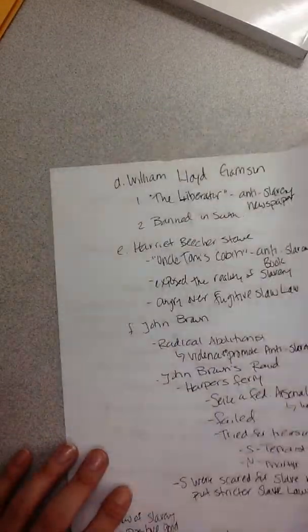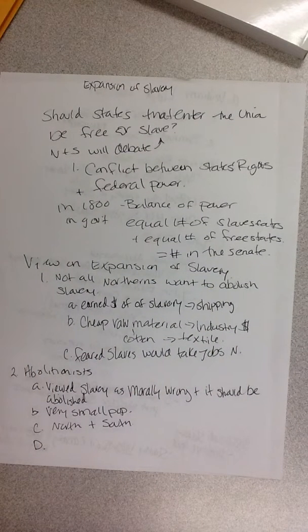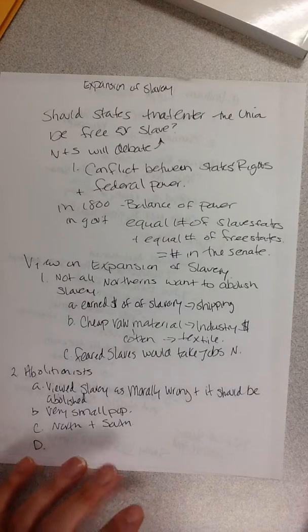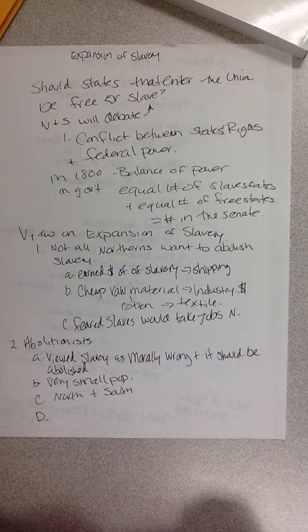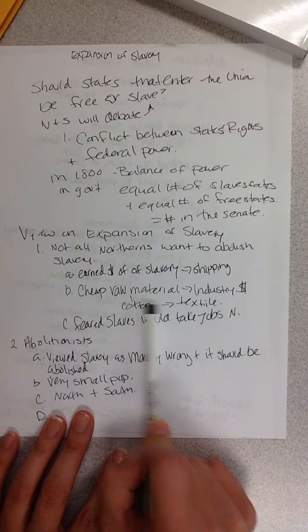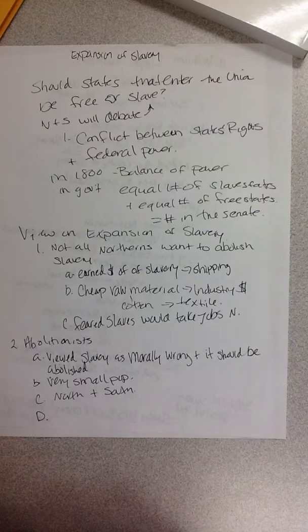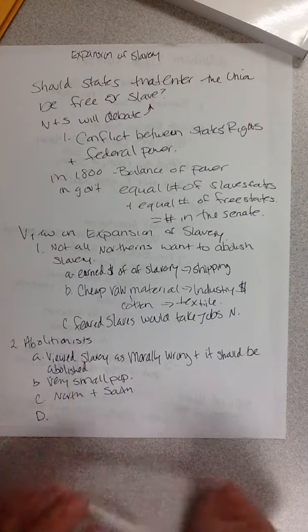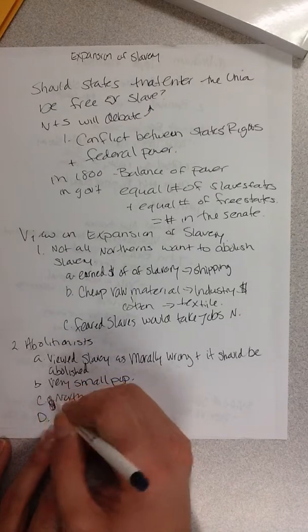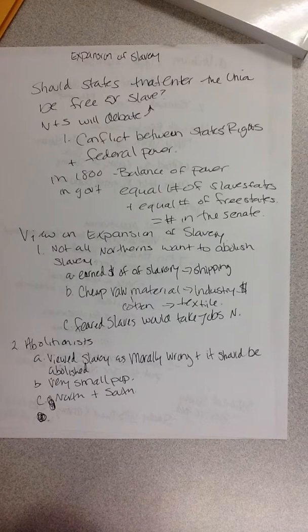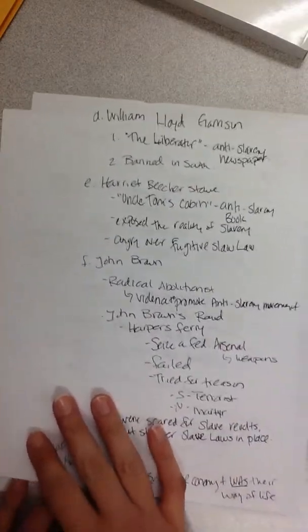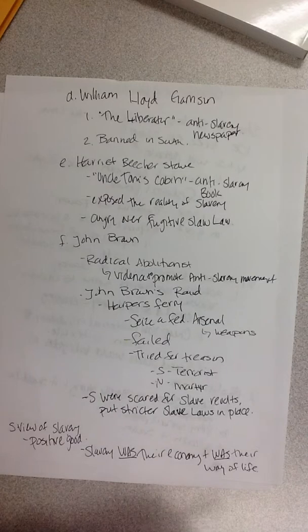So as a quick review: the question is should states enter the Union as free or slave? The conflict is between states' rights and federal power. In the 1800s, there's a balance of power and they need to keep it equal, specifically in the Senate. Not all Northern states want to abolish slavery — they earn a lot of money off it, either through raw materials like cotton to fund their textiles or through shipping those raw materials. They also feared that freed slaves would take jobs in the North. Abolitionists viewed slavery as morally wrong and believed it should be completely abolished. They had a very small population in the beginning and were found in both the North and the South. The main three you need to know are: William Lloyd Garrison, who wrote the anti-slavery newspaper The Liberator, which is banned in the South.